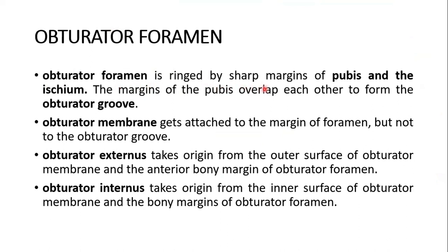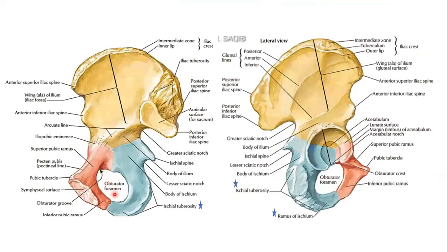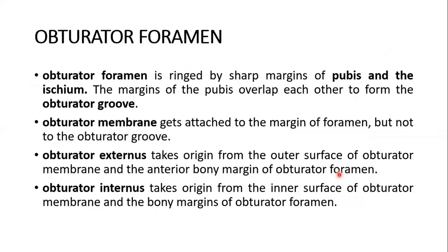The obturator membrane gets attached to the margin of the foramen, not to the obturator groove. Obturator externus takes origin from the outer surface of the obturator membrane and the anterior bony margin of the obturator foramen. Obturator internus takes origin from the inner surface of the obturator membrane and the bony margins of the obturator foramen.